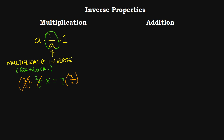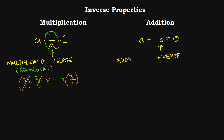For addition, if we take A and add it to negative A, we expect to get 0. We call negative A the additive inverse of A — because we're adding, it's the additive inverse. Another way to say this is it's the opposite of A. When we add a number and its opposite, we get 0.